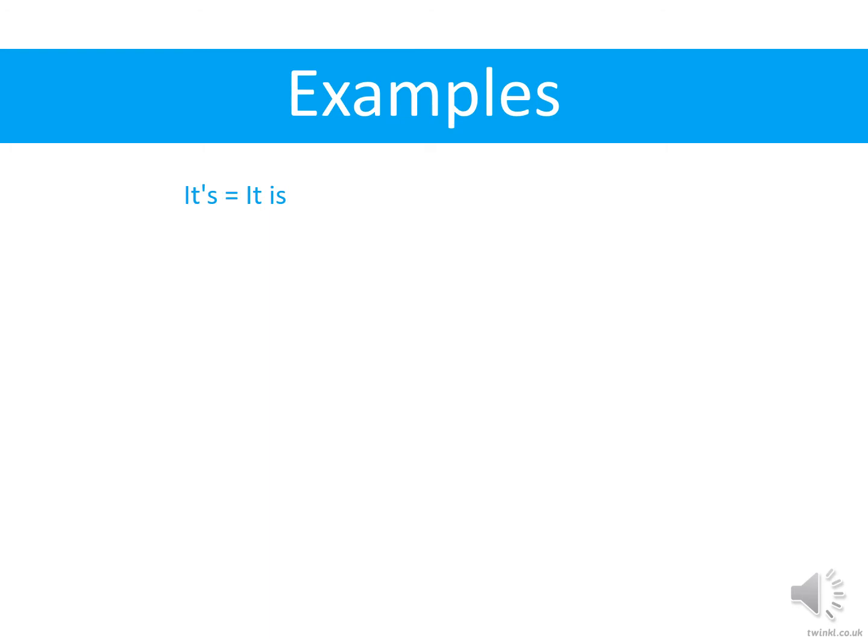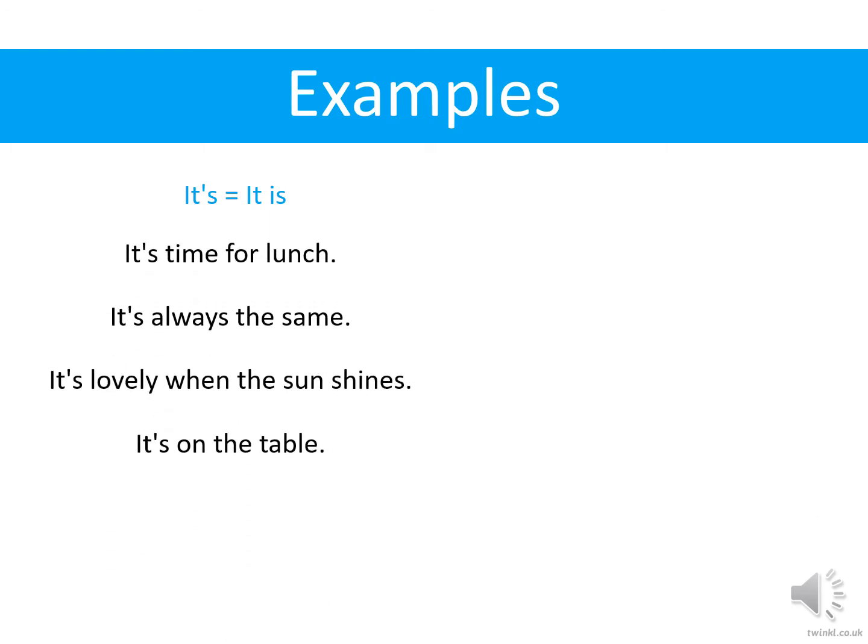Some examples of 'it is': 'It is time for lunch' becomes 'It's time for lunch.' 'It is always the same' becomes 'It's always the same.' 'It is lovely when the sun shines' becomes 'It's lovely when the sun shines.' 'It is on the table' becomes 'It's on the table.'